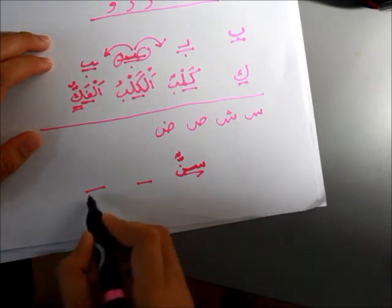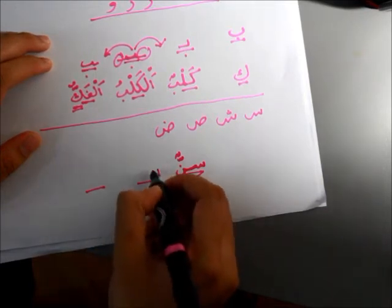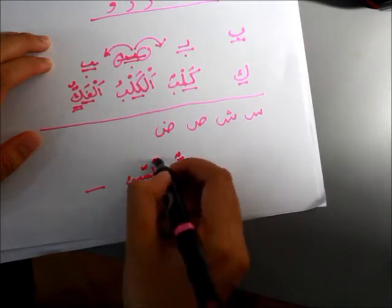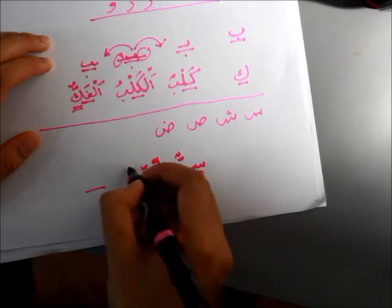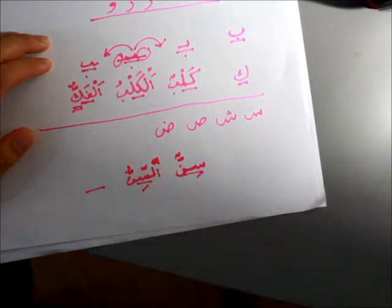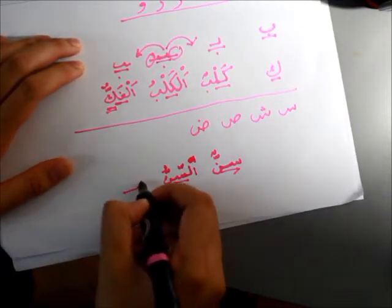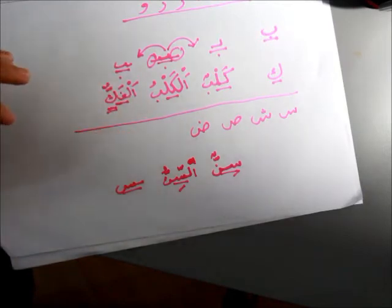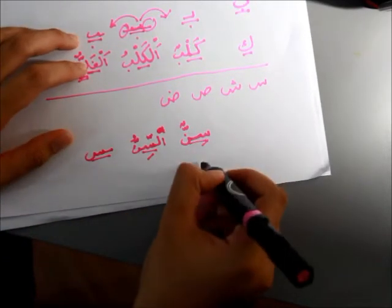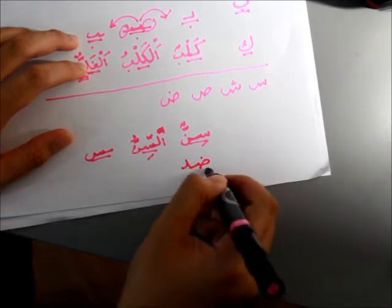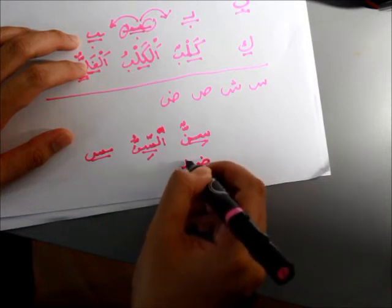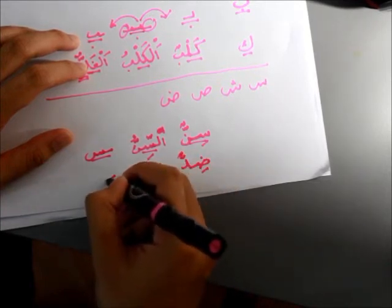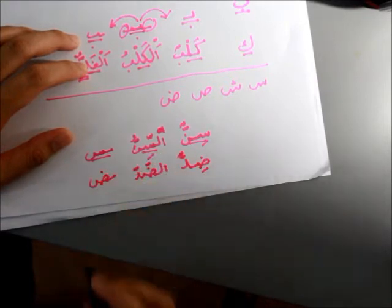Likewise, when it is in the middle or at the end, you do it the same way. For instance, we take As-Sin — because Sin is a Huruf Syamsiyah, you put a Shaddah here and do not pronounce the Lam, so you say As-Sin, meaning 'the tooth.' At the end, Sin occurs similarly. The same applies to Swad and Dwad — you have a dot and leave one line before attaching to the next letter.